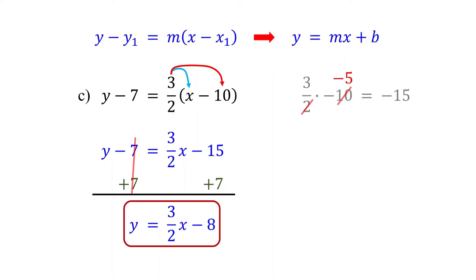We now have the equation in slope-intercept form, with a slope of 3 halves and a Y-intercept of negative 8.